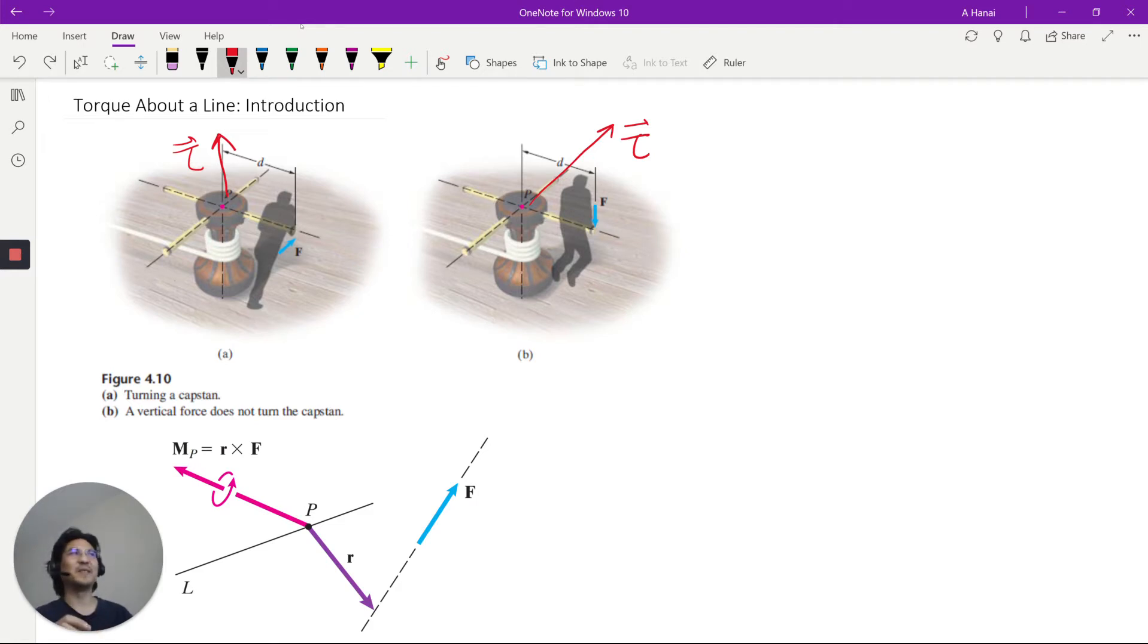So how do you get torque about a line? First we need to define the line. So we set up some unit vector, say here, along the line. So you define the unit vector. That's how you're quantifying the line. And then the steps to solve. You pick a point on the line. Any point.